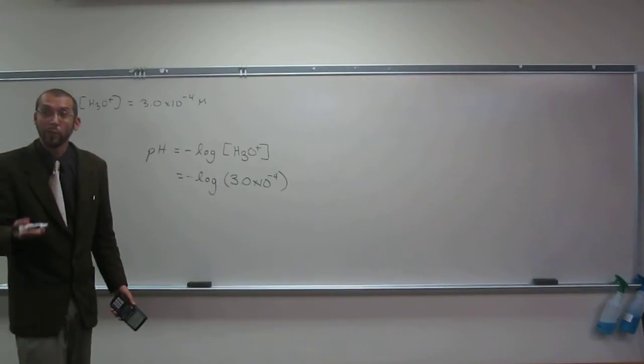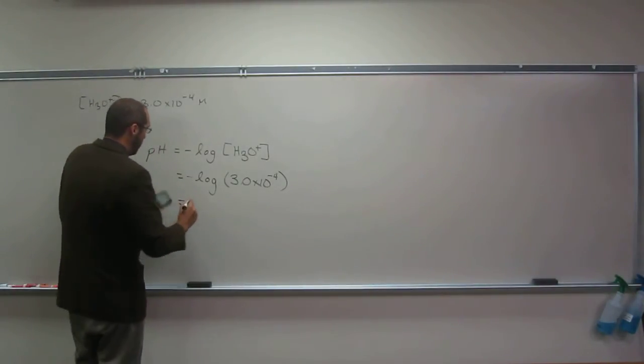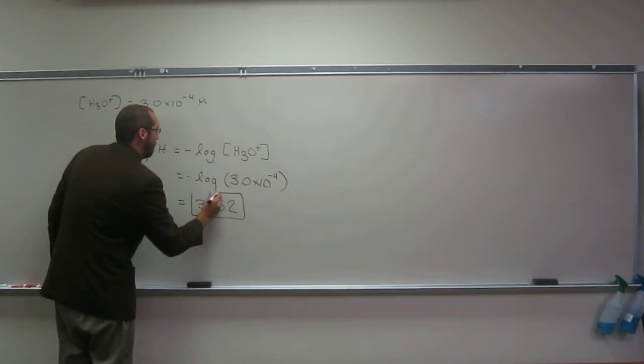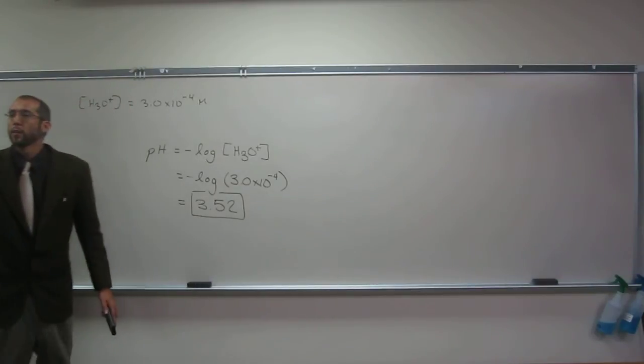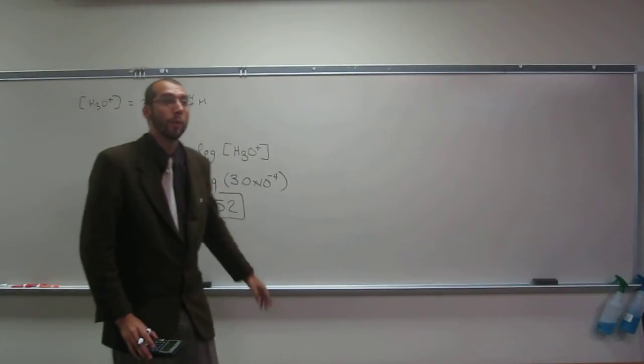So that's just a sig fig rule you've got to remember. So the answer to this would be 3.52. That's the pH. Just remember that you increase it when you take the log and decrease it when you go the other way.